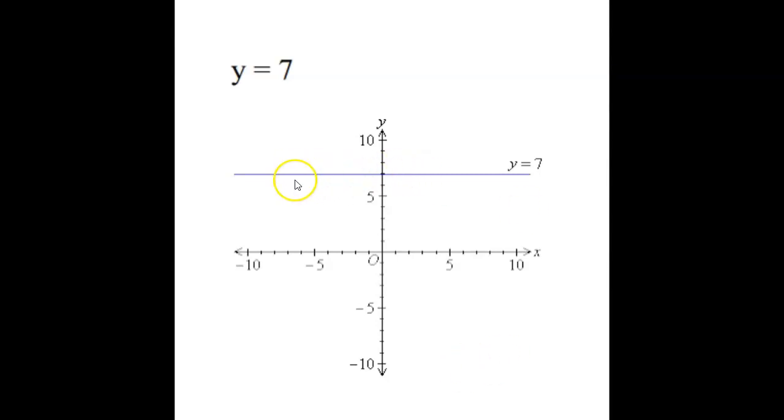We can look at it physically. So here's the graph of y equals 7. We see it's a horizontal line, and therefore the slope is 0.